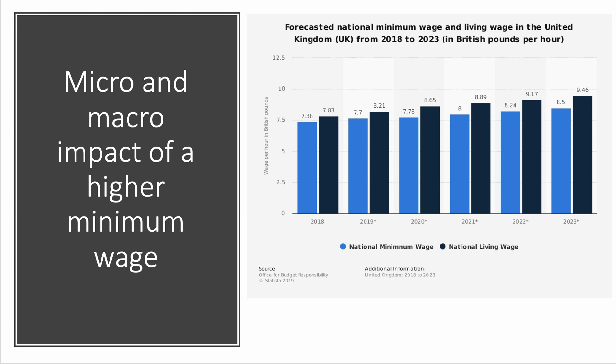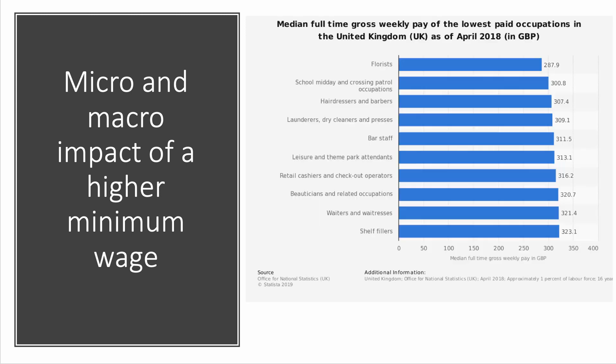Here's the minimum wage data for the UK showing a gradual increase in minimum wage. In the UK it's £8.21 now for adult workers and it's forecast to rise to nearly £9.50 by 2023. Some politicians are aiming for a £10 minimum wage at some point in the next economic cycle.